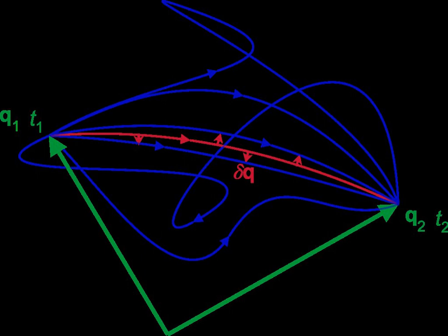Let q represent the true evolution of the system between two specified states q1 and q2 at two specified times t1 and t2, and let ε be a small perturbation that is zero at the endpoints of the trajectory.